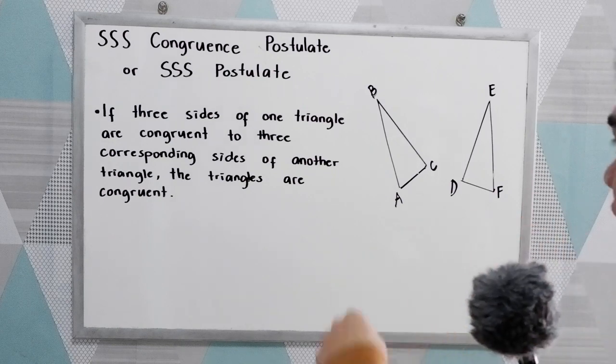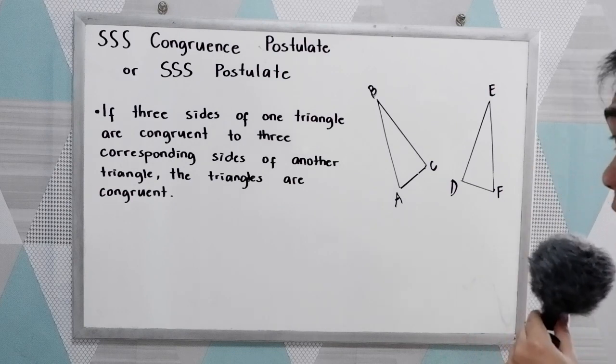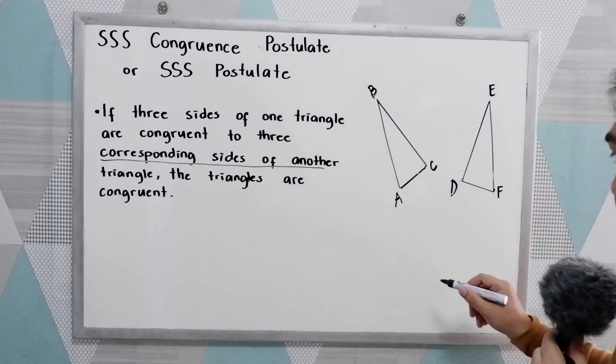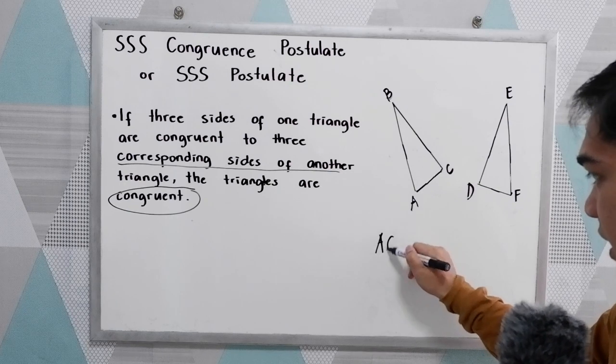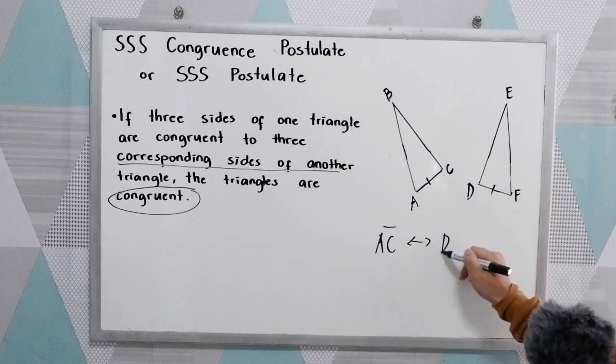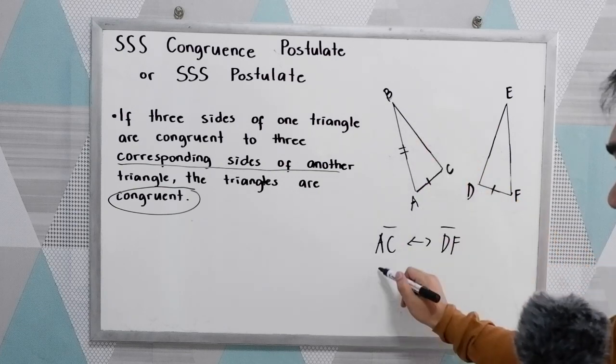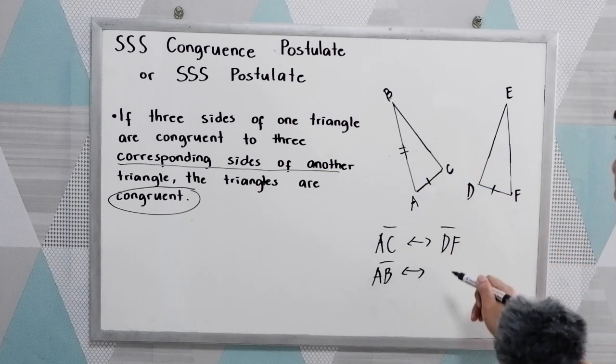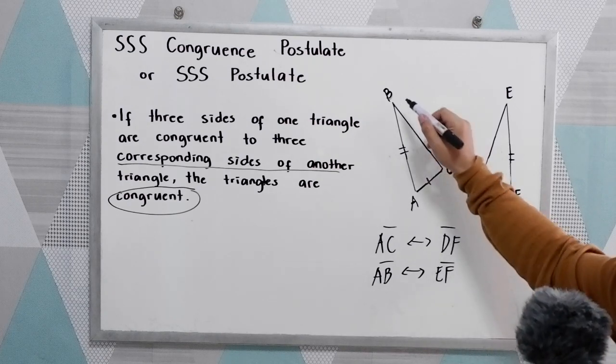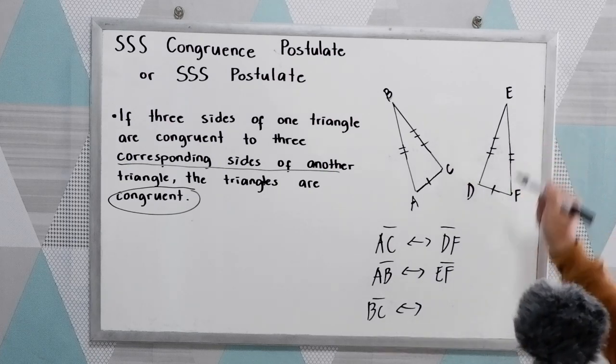Now to check using the SSS postulate, let's find first the corresponding sides of the triangles. So the corresponding sides are AC corresponds to DF, and we know that AB corresponds to EF, and BC corresponds to DE.